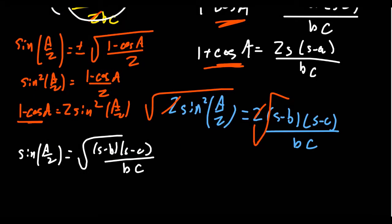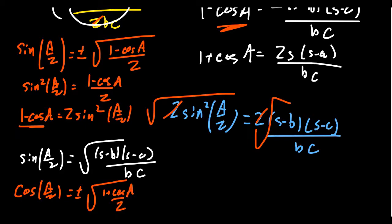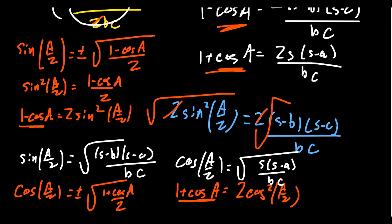For the cosine half-angle identity: cos(A/2) = ±√((1 + cos A)/2), so 1 + cos(A) = 2cos²(A/2). Equating with our result for 1 + cos(A) = 2s(s − a)/(bc) and solving gives: cos(A/2) = √(s(s − a)/(bc)). These are among the most powerful trigonometric identities we've encountered.